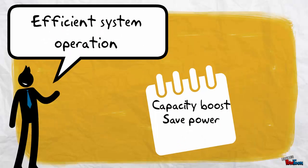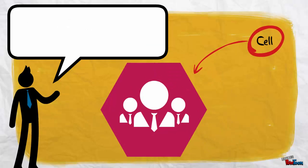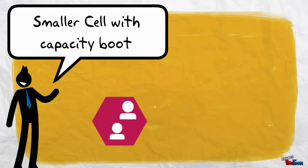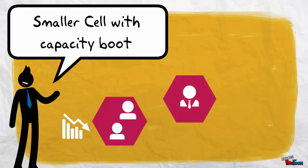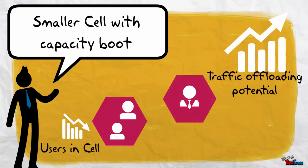Efficient system operation allows capacity boost and saves power. First, capacity boost can be achieved by splitting cells into smaller cells, which means decreasing users in a cell and thus increasing the potential for traffic offloading on the network.